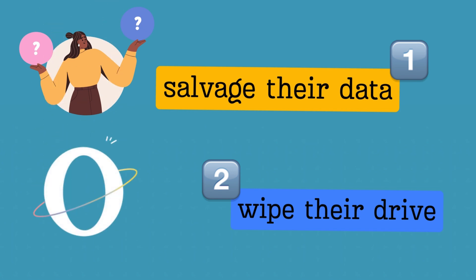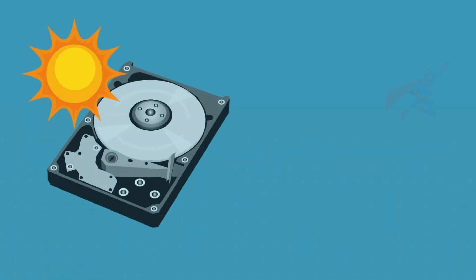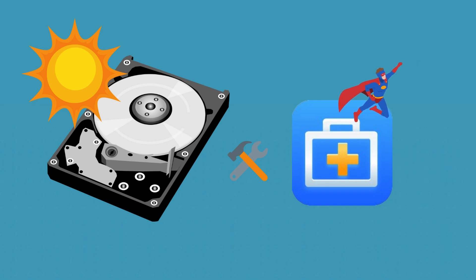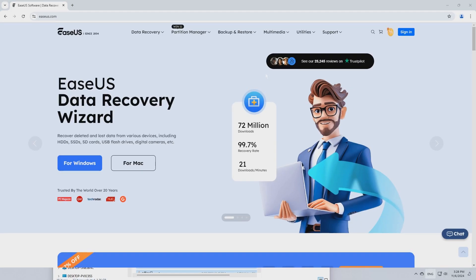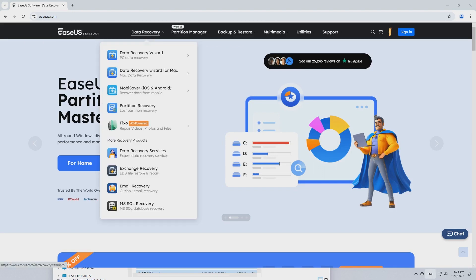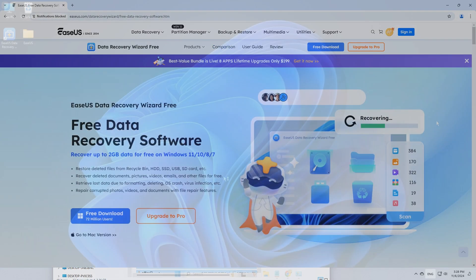This video from EaseUS will do its best to protect your critical data. Recovering a crashed or failed hard drive is feasible whenever logical damage occurs, because software like EaseUS Data Recovery Wizard makes corrupted hard drive recovery possible. You can download this tool from the link in the description or the EaseUS official website and recover your data for free.